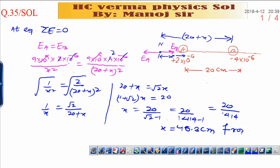x is the distance from point A. Therefore, neutral point from point A, where net electric field will become zero is 48.3 cm.